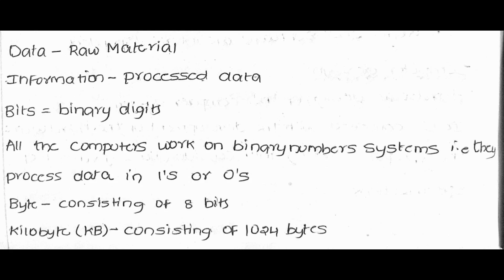Memory units: some programs use only kilobytes of memory, others use megabytes, gigabytes, or terabytes. One byte equals 8 bits. One kilobyte consists of 1024 bytes. One megabyte consists of 1024 kilobytes. One gigabyte consists of 1024 megabytes.